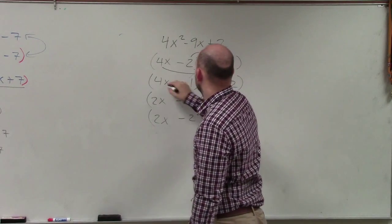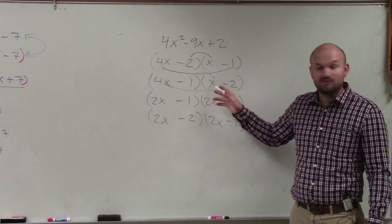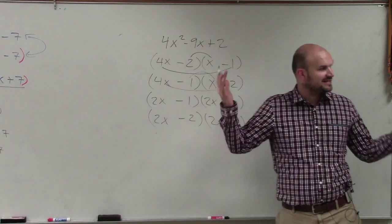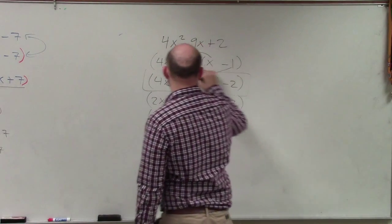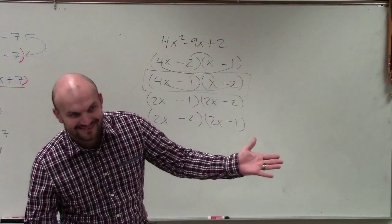So then I go to the next one. And guess what? Negative 1 times x is negative 1x. 4x times negative 2 is negative 8x. Negative 1x plus negative 8x equals negative 9x, which works, right? So that is my factored polynomial. Ta-da.